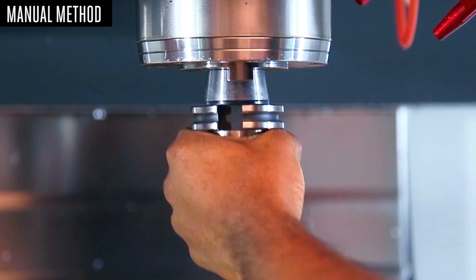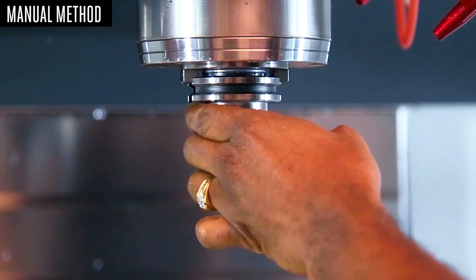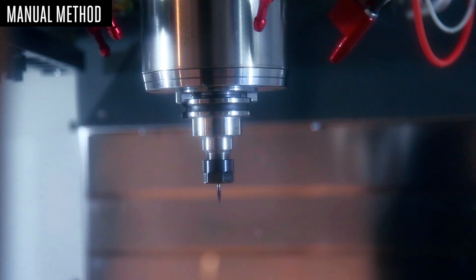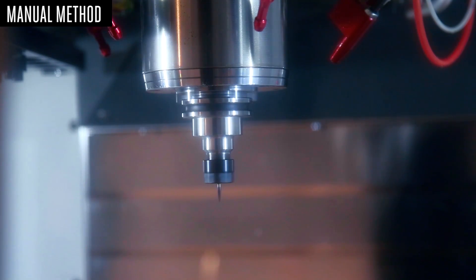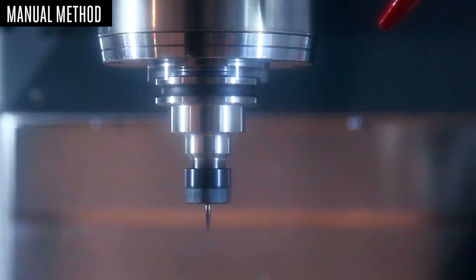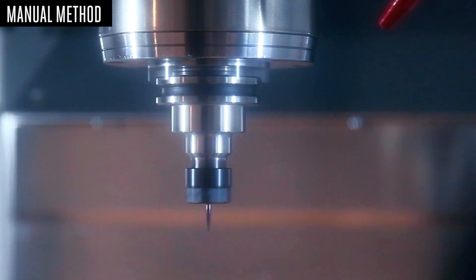Find the most well-balanced tool holder in your shop, install it in the spindle, and run the spindle at max RPM. Place your hand on the machine enclosure. If you can feel excessive vibration in the enclosure, then you will begin the balancing process.